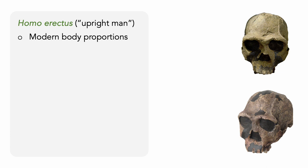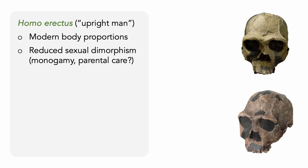Homo erectus, the upright man, was tall and slender with relatively modern body proportions — shorter arms and longer legs. Compared to earlier hominins, there was reduced sexual dimorphism between males and females, which in other primates has been associated with monogamy and co-parental care. There's also evidence of single-sex activities, with males engaging in higher-risk behaviors like defending territory or hunting large animal prey — often unsuccessfully. Careful analysis of their teeth has revealed more pits and scratches than earlier hominins, suggesting a very different diet, and consuming more animal fats would have allowed them to meet the increasing energy demands of their bigger brains.